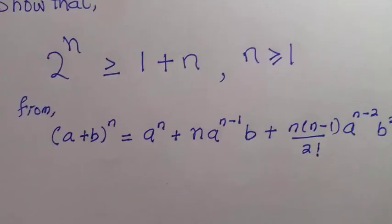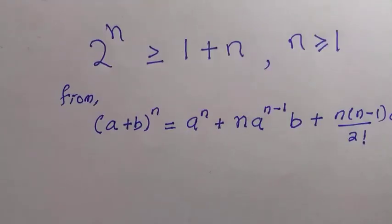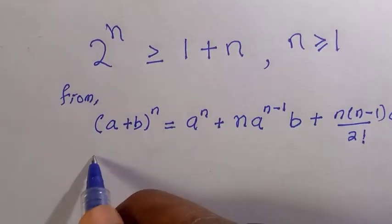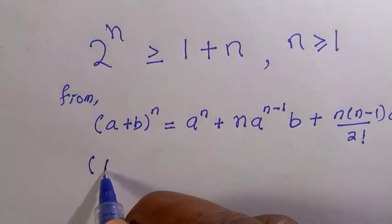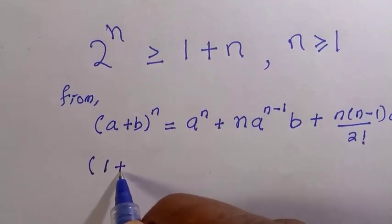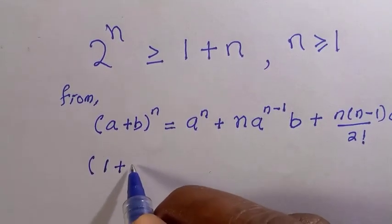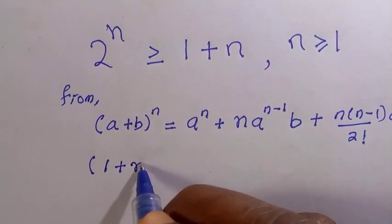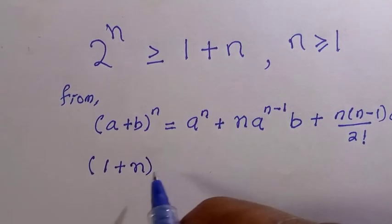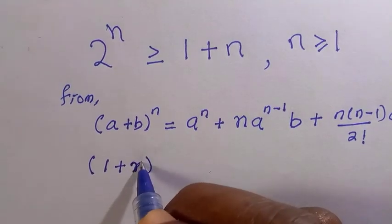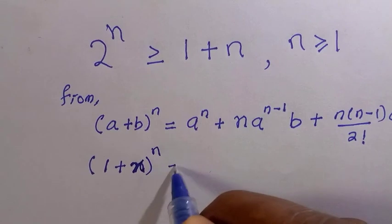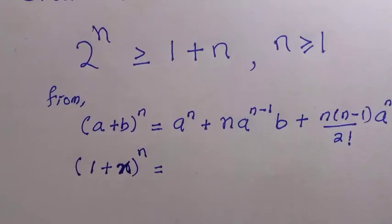And so for this, we are going to replace this with: if I have a to be 1 and I have my b to be x, then everything raised to the power of n.